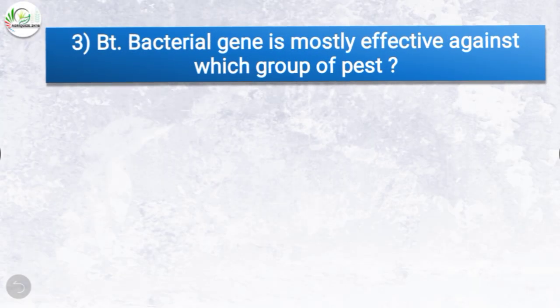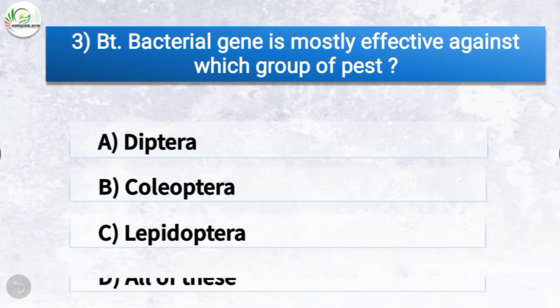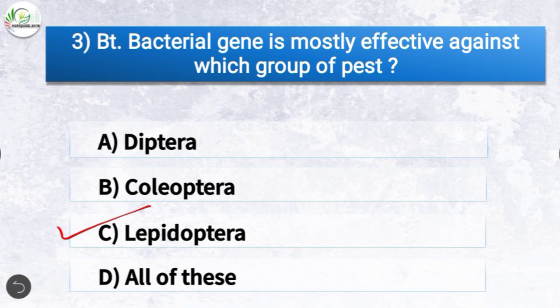Question number three: BT bacterial gene is mostly effective against which group of pests? The options are Diptera, Coleoptera, Lepidoptera, or all of these. The correct answer is option C, Lepidoptera. So BT bacterial gene is mostly effective against the Lepidoptera group of pests.